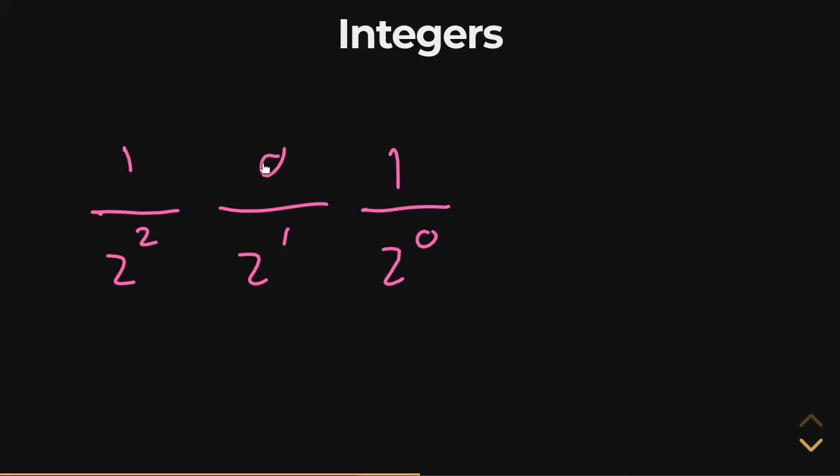Then over here, we got two to the one. That's a zero. We're not going to deal with that. And over here is two to the two, which is four. So we're going to add those two together and we're going to get five. So that means one, zero, one is encoding the number five.